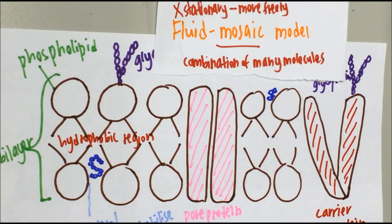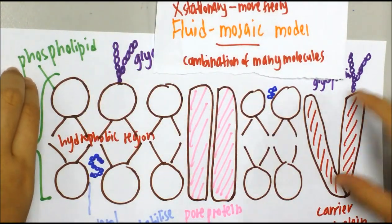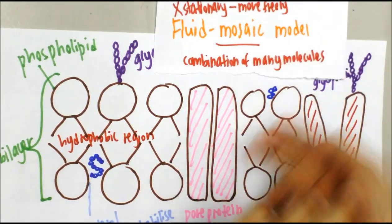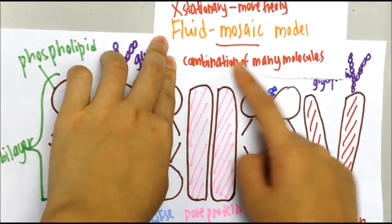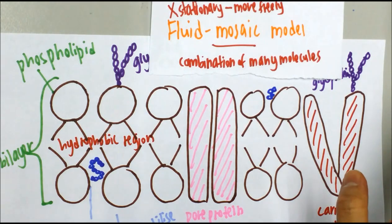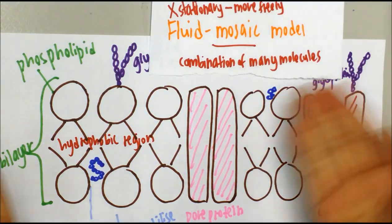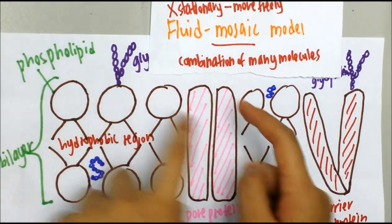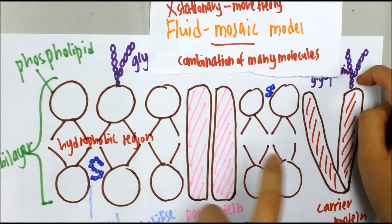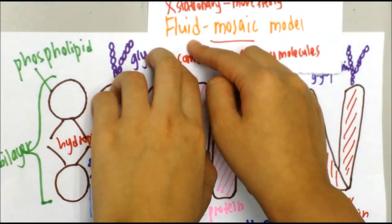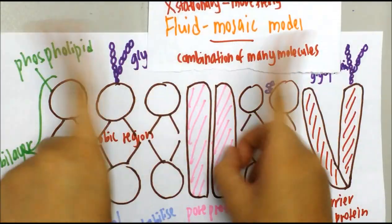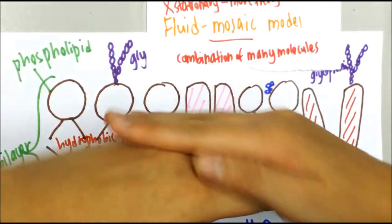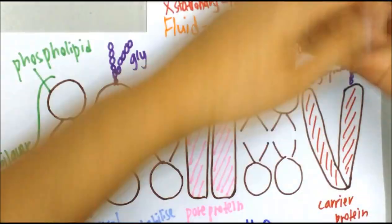From the plasma membrane structure, we can say that the plasma membrane is also known as the fluid mosaic model. Mosaic refers to the combination of many different molecules such as phospholipids, proteins, cholesterol, and carbohydrates. Fluid means the molecules in the plasma membrane are not stationary — they can move freely.